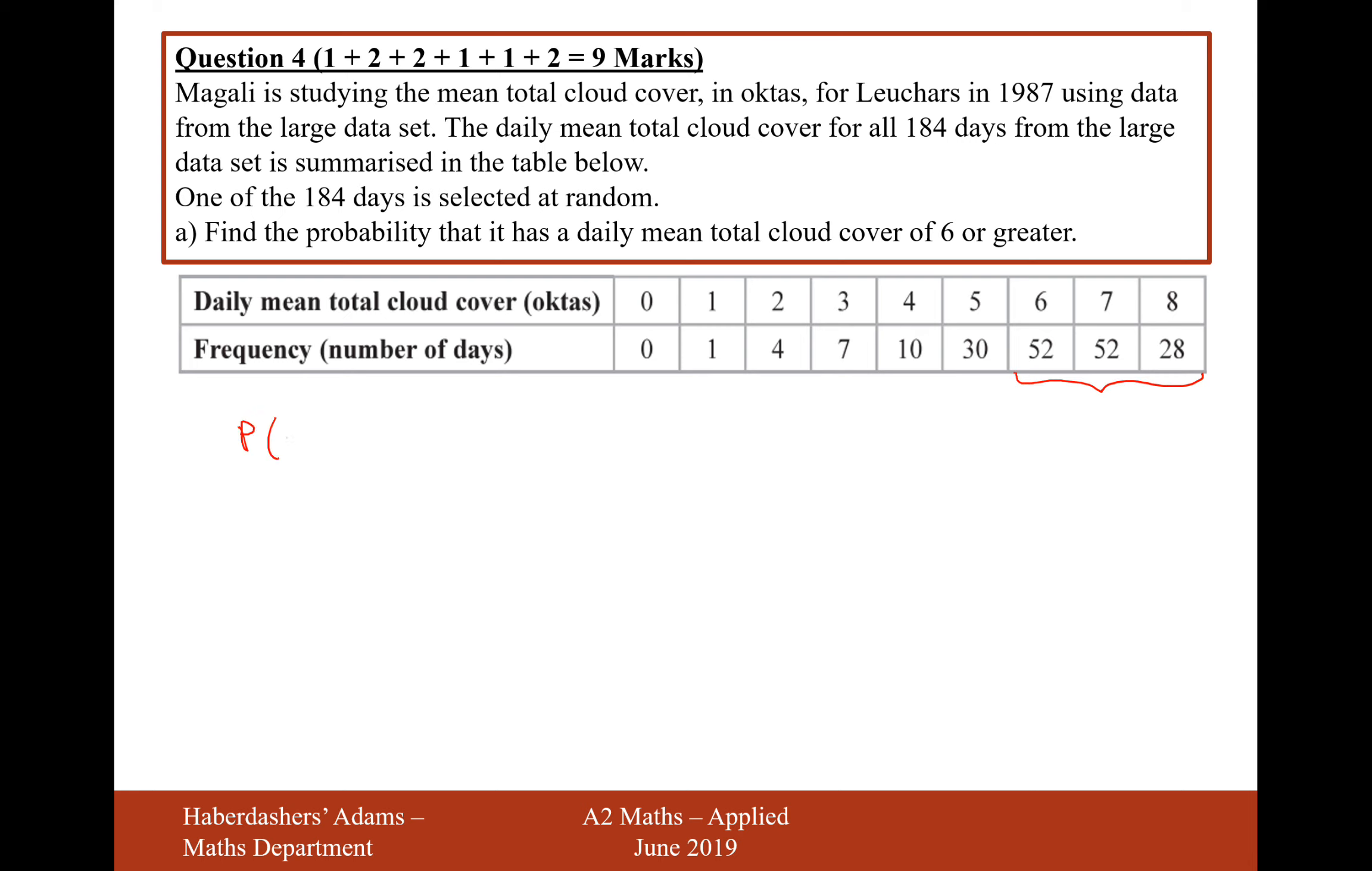So the probability that x is greater than or equal to 6 is going to be 52 plus 52 plus 28 over the total. Which is going to equal, let's just do it on the calculator, 52 plus 52 plus 28. That gives us 132 over 1 plus 4 plus 7 plus 10 plus 30 plus that 132 that we added together before. 184.